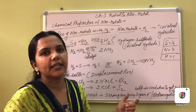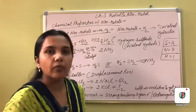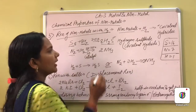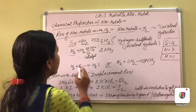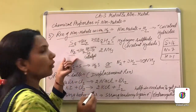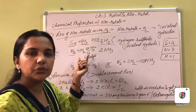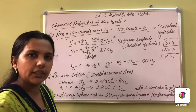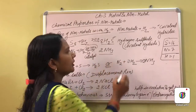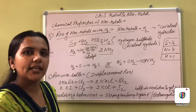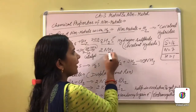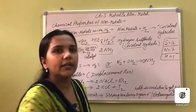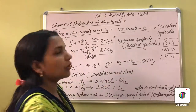After that, whenever nitrogen — which is a non-metal — reacts with hydrogen at a temperature of 723 to 773 Kelvin, then the formation of ammonia occurs, the formation of NH₃. So this is also a covalent hydride.